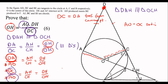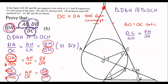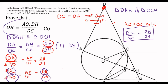So we can write DC over AO equals DH over OH. Then rearranging, OH equals AO times DH over DC. That is a very typical exam question — I've seen many exam questions that look like that.